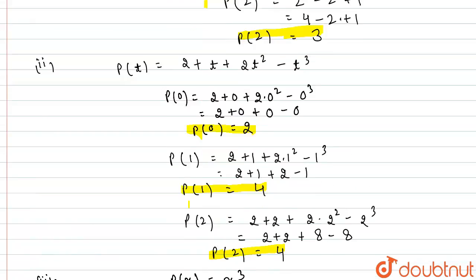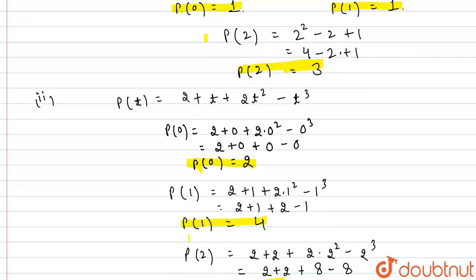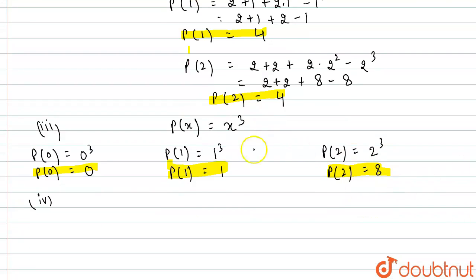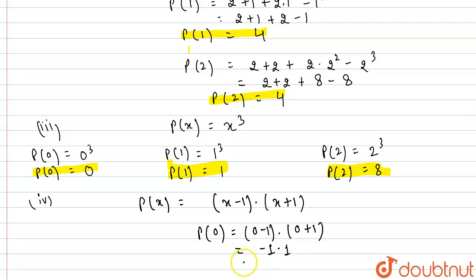Now the fourth part. In the fourth part, we are given the polynomial as (x minus 1) into (x plus 1). So p(x) is nothing but (x minus 1)(x plus 1). Firstly I will find out p(0). This will be (0 minus 1) multiplied by (0 plus 1), which gives minus 1 into 1. So I am getting p(0) as minus 1.